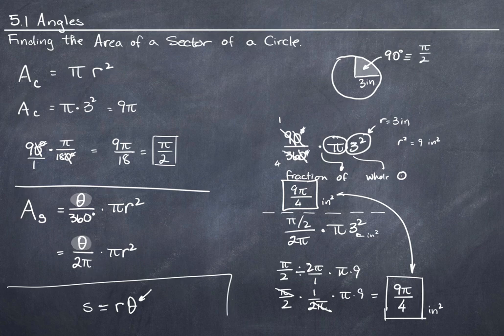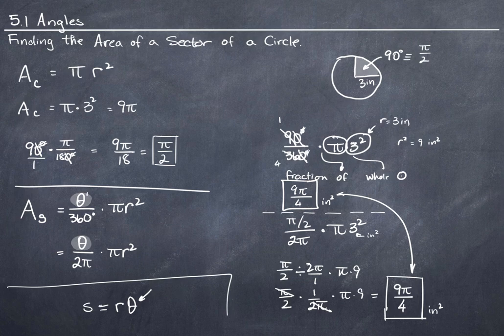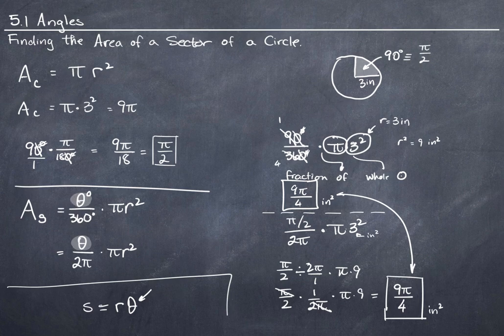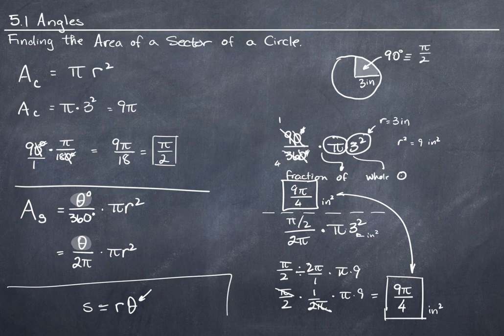And so if you take the, you don't normally see this, but I'm going to put theta degrees here. Theta degrees out of 360 degrees is a fraction of a whole circle. Theta radians out of 2 pi radians is a fraction of a whole circle. So in this case, theta can be in either degrees or radians.